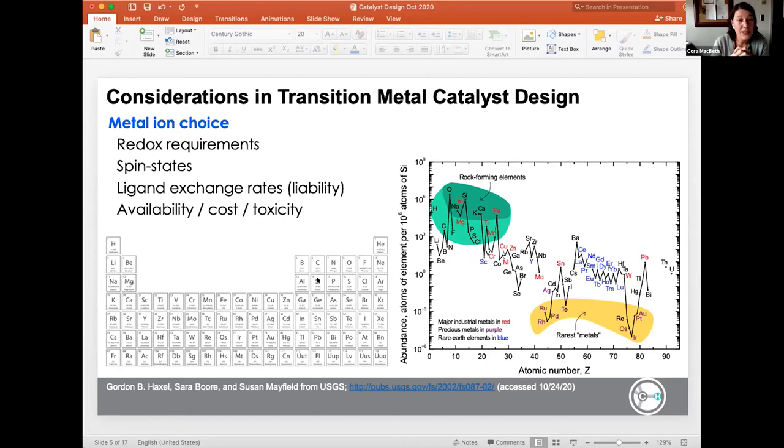Something else I always encourage students to think about when choosing metals for processes or thinking about catalytic reactions are ligand exchange rates or ligand lability at the metal center. Are ligands quickly exchanging at your metal centers or are there slow processes in terms of how ligands are coming on and off? And then finally, you need to think about the availability of your metals, their cost. If you want to use it in a massive industrial process, you probably don't want to rely on really expensive metals and their toxicity. And so when you look at the periodic table, it looks like if I'm working with transition metals, I have a lot of options. And you really do. The periodic table is your oyster.